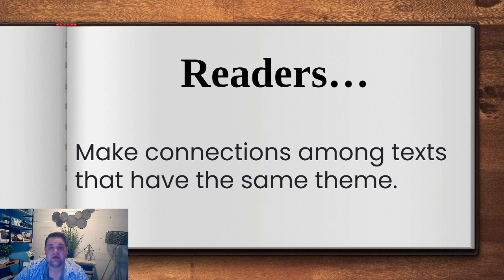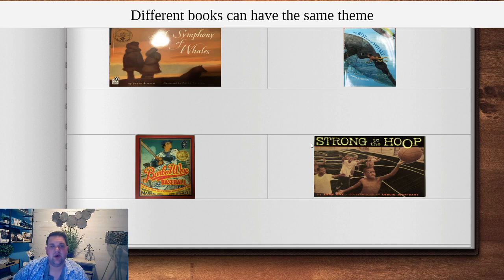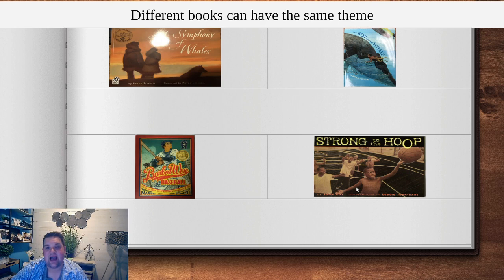A lot of times books that we read really relate to each other when we think about theme. You might have a big selection of books about friendship or family that you've read before. Today we're going to compare two sets of books and decide if we can think of any themes that they share. We're going to think about A Symphony of Whales and A Boy and a Whale together, and then Barbed Wire Baseball and Strong to the Hoop together.